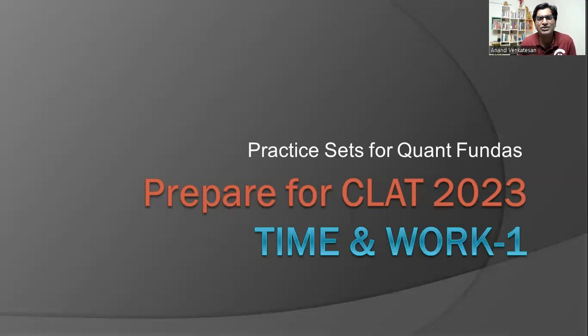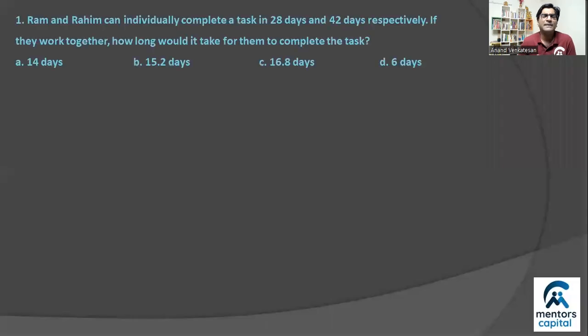For today's session, we will start this. We will see the first question. The first question is that Ram and Rahim are two people and they individually take 28 days and 42 days. Now, usually when I start these time and work questions, I will assume work as an LCM. So here I have to calculate LCM as the work. Now I will notice that 28 is 14 into 2 and 42 is 14 into 3.